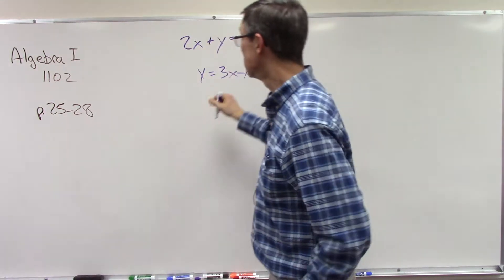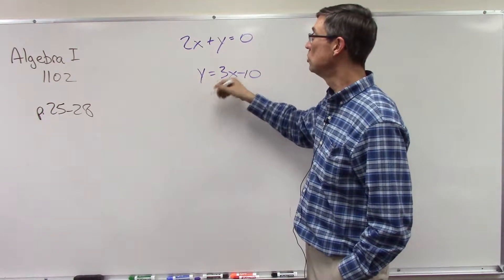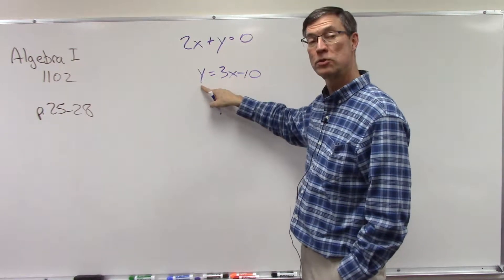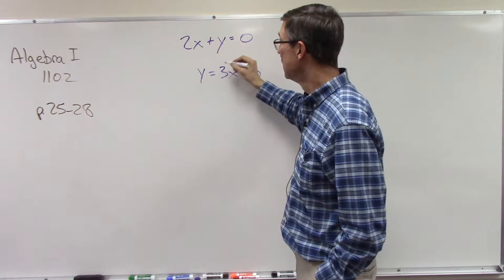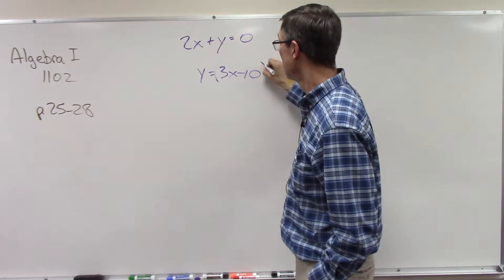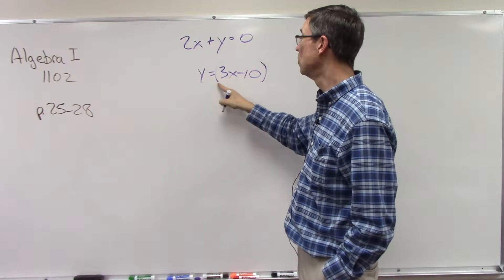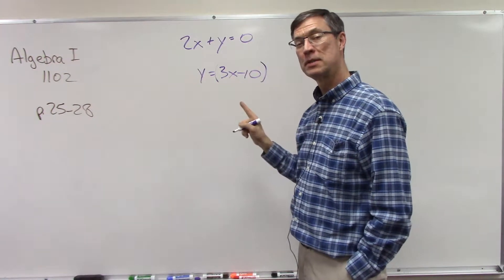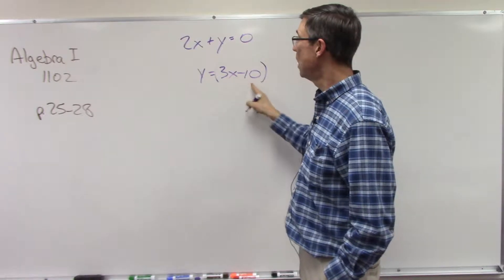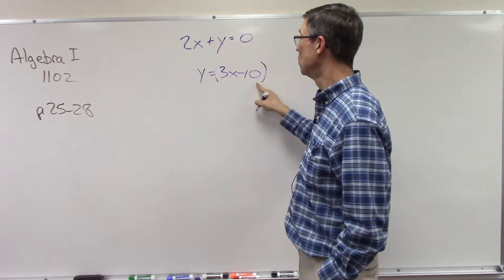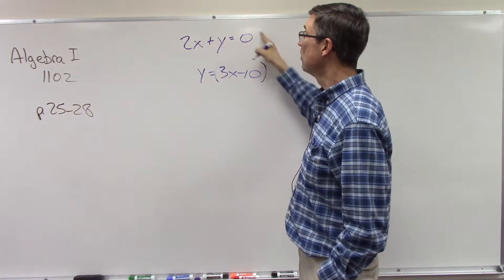It's really easy to do substitution when they actually have solved for one of the variables. Like in this case, y equals - and I like to put parentheses around this just so I recognize that y is this whole thing - 3x minus 10. Because y is equal to this whole thing, I can go up to the other equation and plug it in.